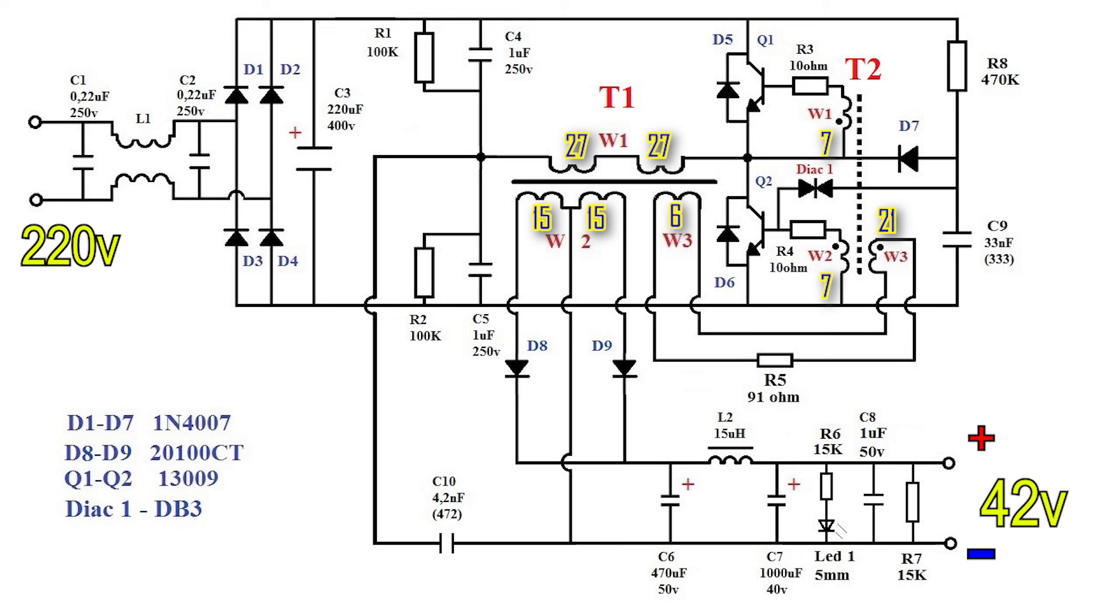As a result, voltage appears on the secondary winding W3, which is supplied to transformer T2. Transistor Q1 then opens, directing current to the other one as it appears.